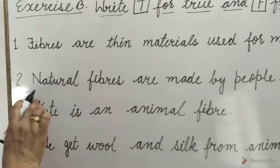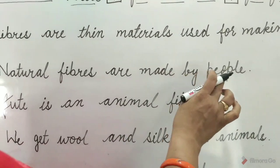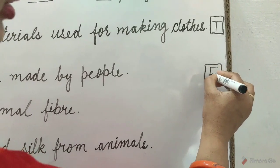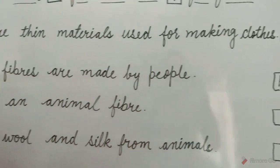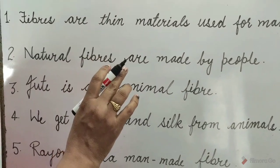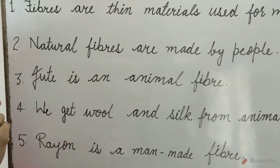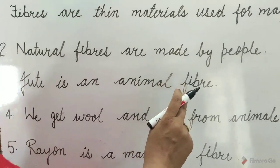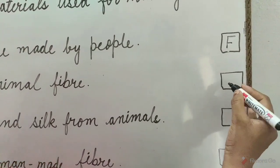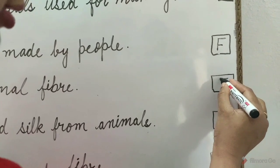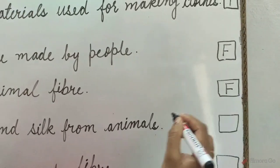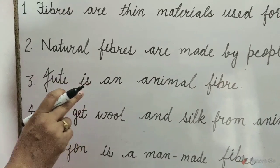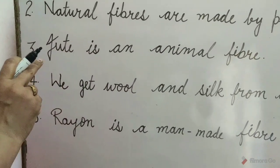2. Natural fibers are made by people. This is false, so write F, because man-made fibers are made by people. 3. Jute is an animal fiber. This is false, because jute is a natural fiber and a plant fiber.